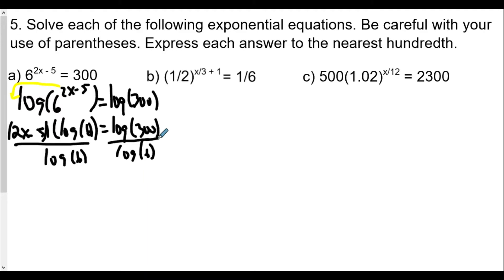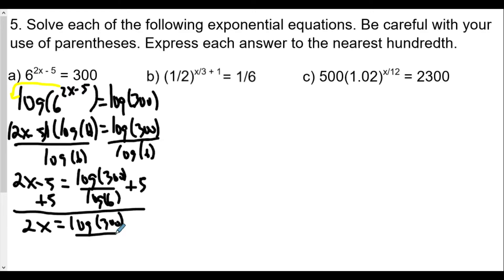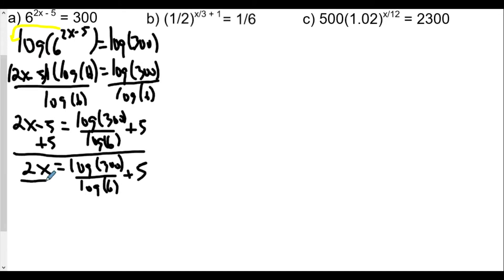So keep in mind, it's not log of 300 over 6. It's log of 300 divided by log of 6. So now we have 2x-5 is equal to log of 300 divided by log of 6. Now we're going to add 5 to both sides. Now in this case, we're going to be trying to solve for x by itself, leaving everything in terms of log. So now we have 2x is equal to log of 300 over log of 6 plus 5. Now we want to get x by itself, so we divide everything by 2.